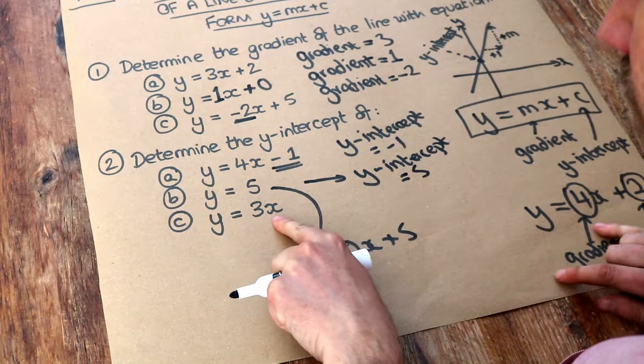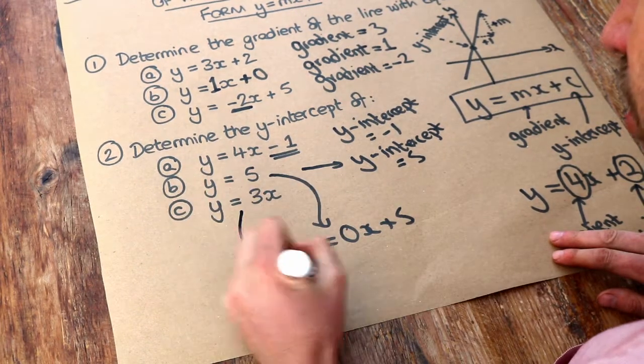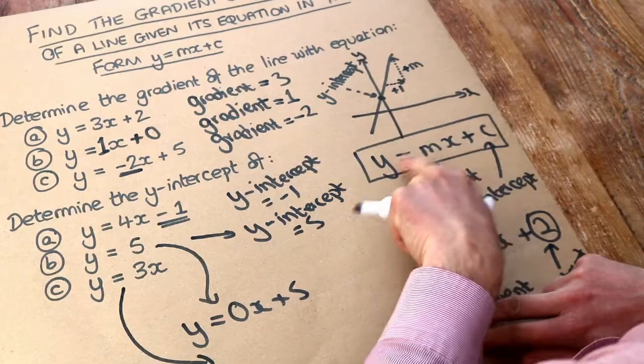And finally, this one, y equals 3x. Now, this time, there's no number on the end. It's y equals 3x, but there's nothing on the end.